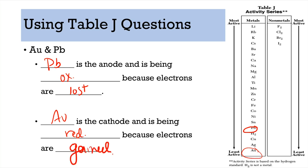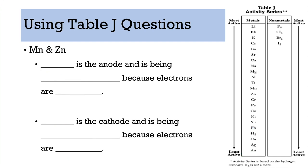Something important to point out: an element may act as a cathode in one setup but could act as an anode in a different setup — it just depends on who its pair is. Things act differently depending on who they're with. Elements are the same way.